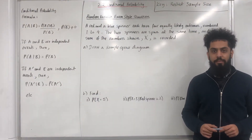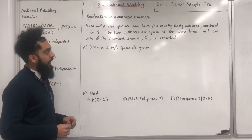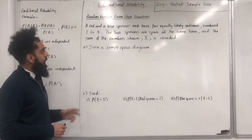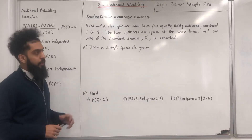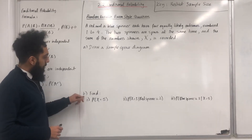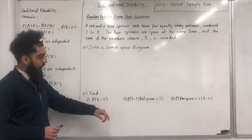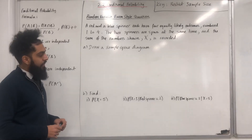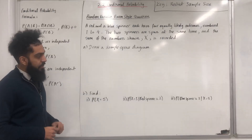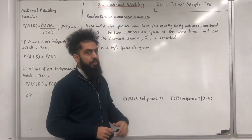Here is a random variable exam style question. A red and a blue spinner each have four equally likely outcomes numbered one to four. The two spinners are spun at the same time and the sum of the numbers shown, X, is recorded. Part A: draw a sample space diagram. Part B: find — part one: probability X equals 5; part two: probability X equals 3 given that red spinner is 2 (restrict sample size); part three: probability blue spinner is 3 given that the sum X equals 5 (restrict sample size).